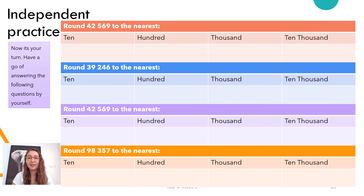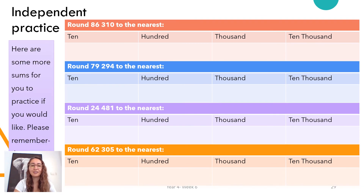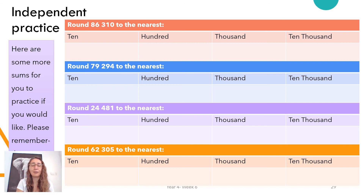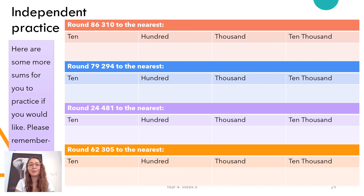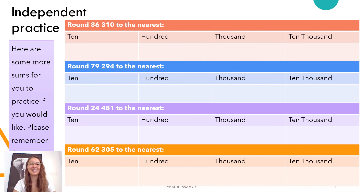Here is your independent practice. You've got four numbers and for each number you're going to round to the nearest 10, 100, 1,000 and 10,000, just like I did. The next page is the same, just four different numbers. Remember: underline the place value column you're rounding, draw an arrow to the next number on the right, then start rounding. Zero, one, two, three, four — goes down. Five, six, seven, eight, nine — goes up. Put your work into the doc by typing or submitting a photo, or do your working out on paper and show an adult to mark it. Have fun with the maths for the week. This is our last lesson. Have a great day, guys. Bye.